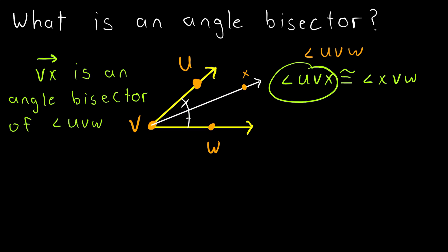We could also say that these two angles have the same measure, which we can write like this. M angle UVX, that means the measure of angle UVX, is equal to M angle XVW, the measure of XVW.